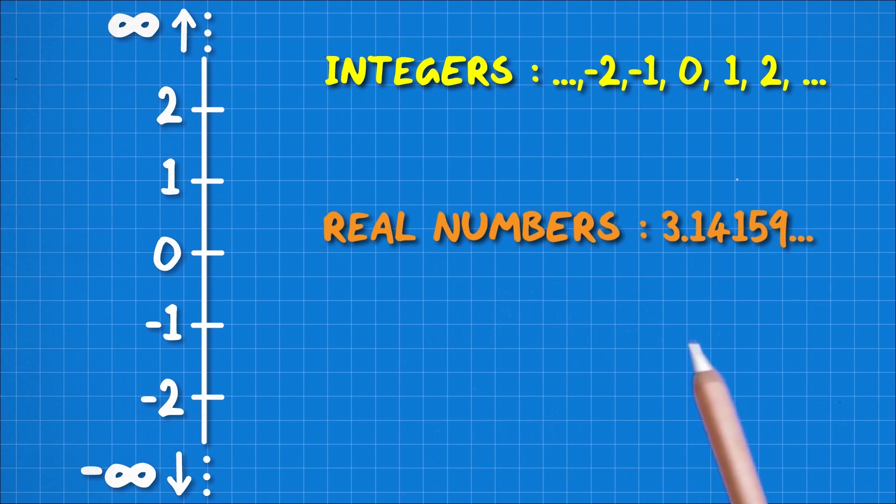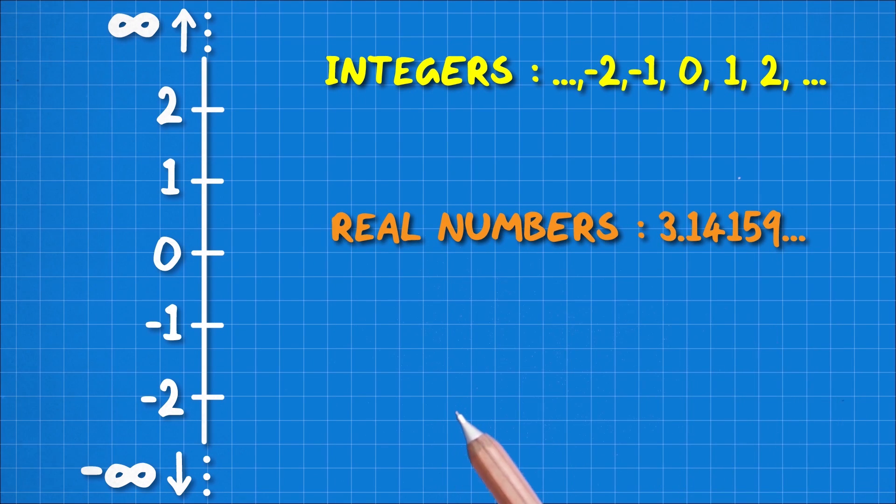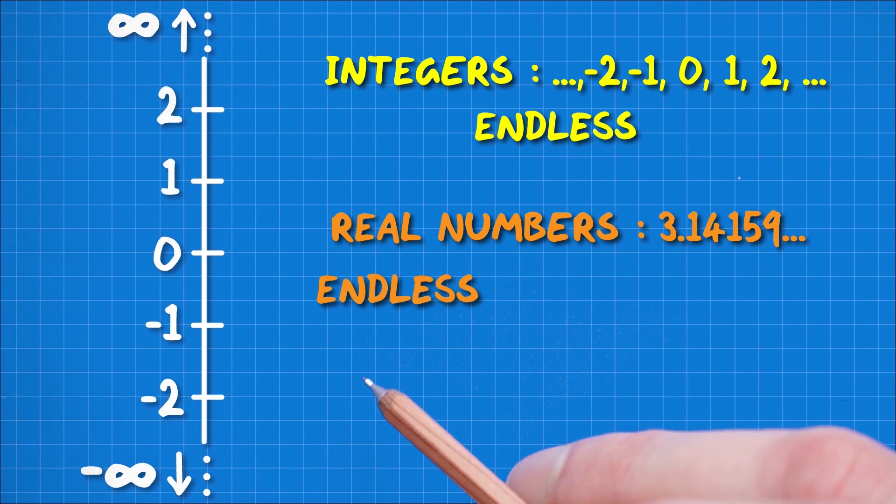So even though the integers and the real numbers are both infinitely big, I'm saying that there's a bigger infinite number of real numbers than there are of integers. And how can this be true? In the end, they're both endless lists of numbers.